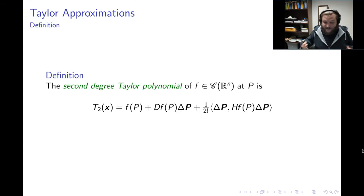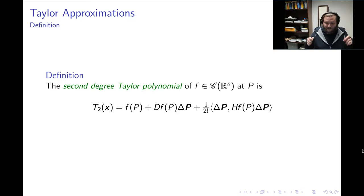So now we have a theory for second-order partial derivatives of a scalar field. The first-order partial derivative of a scalar field is a 1-by-n matrix, and the second-order partial derivative is an n-by-n real symmetric matrix.